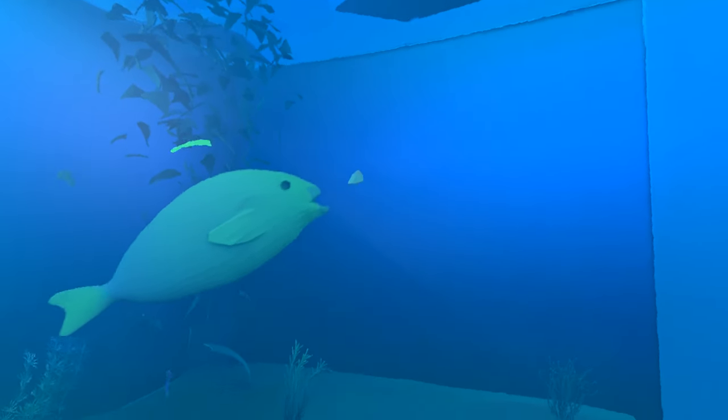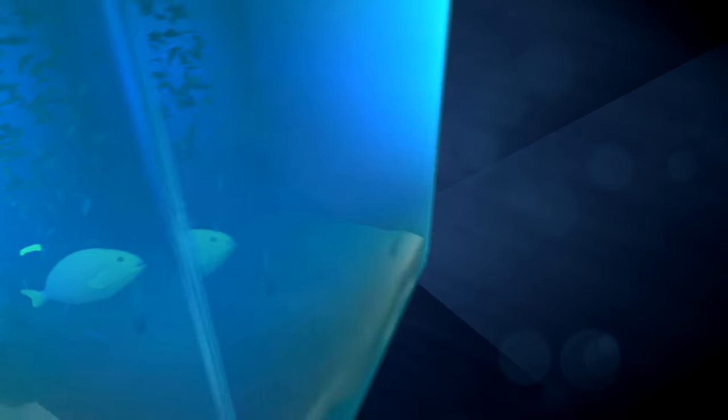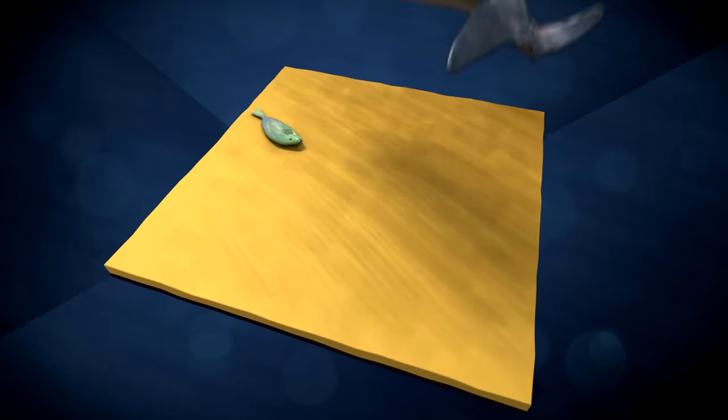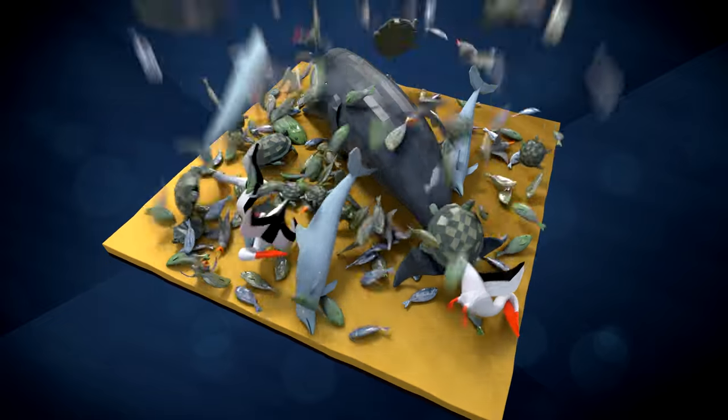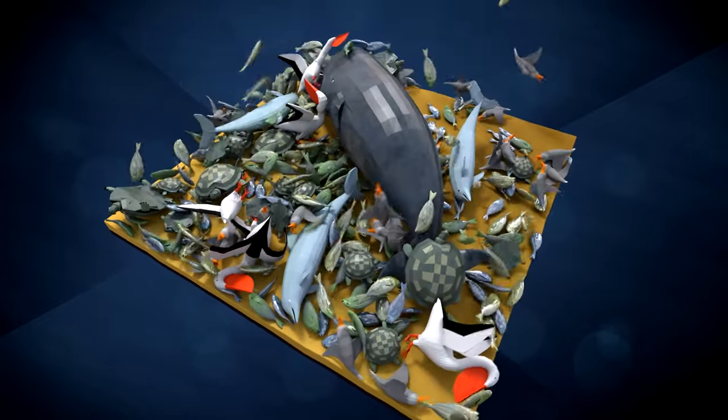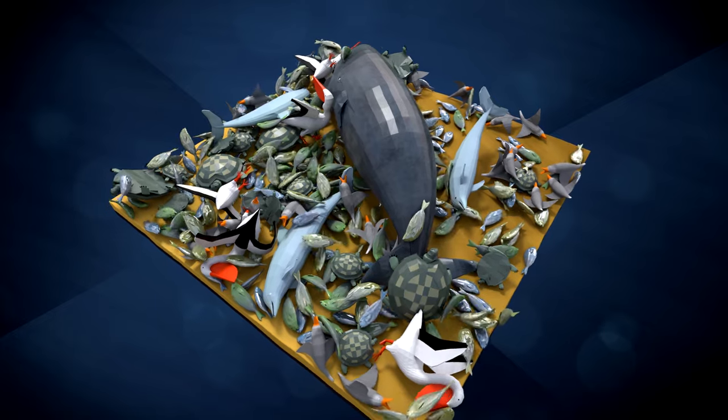Many animals mistake the plastic for plankton and eat their fill. Every year, more than 100,000 turtles, marine mammals and sea birds die a slow and painful death because they starve with a full stomach or because their intestines rupture.